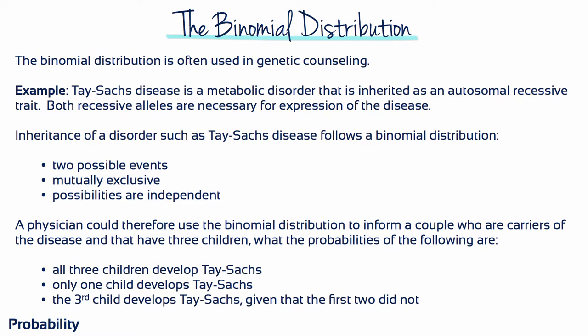A physician could therefore use the binomial distribution to inform a couple who are carriers of the disease and have three children what the probabilities of the following are: that all three children develop Tay-Sachs, that only one child develops Tay-Sachs, or that the third child develops Tay-Sachs given that the first two did not.